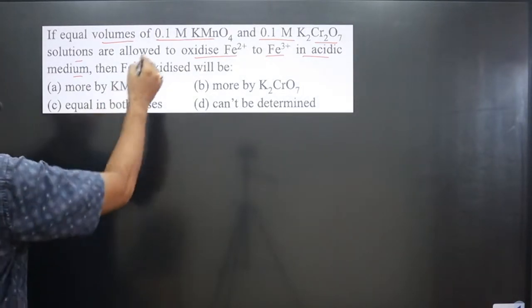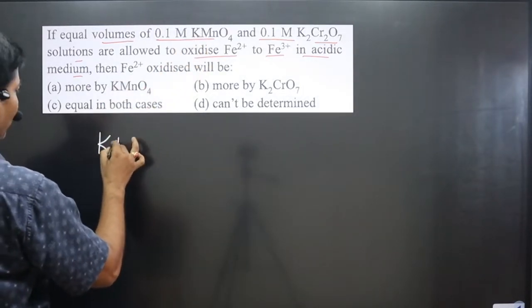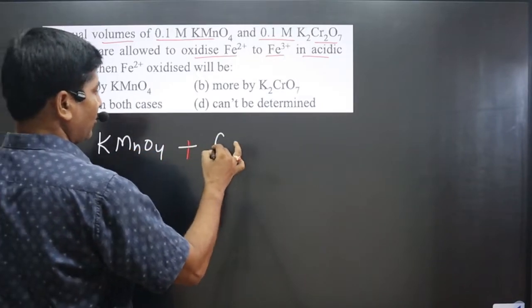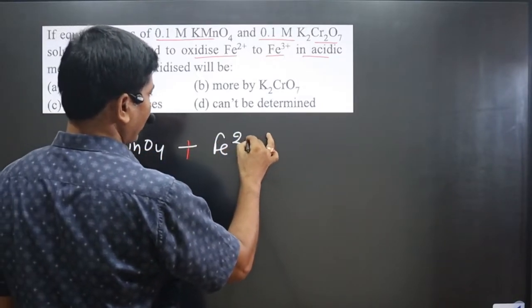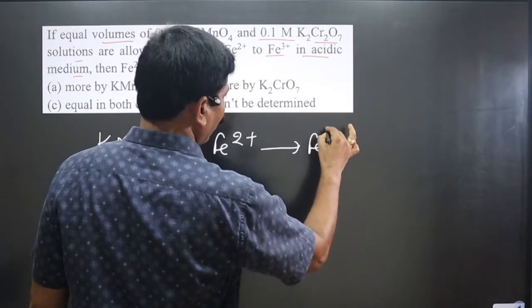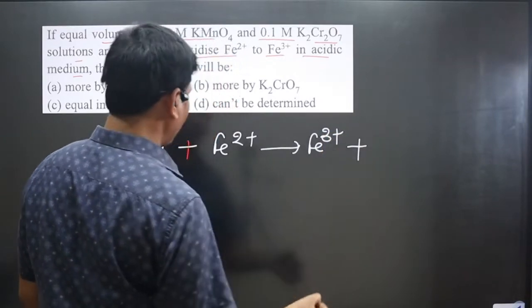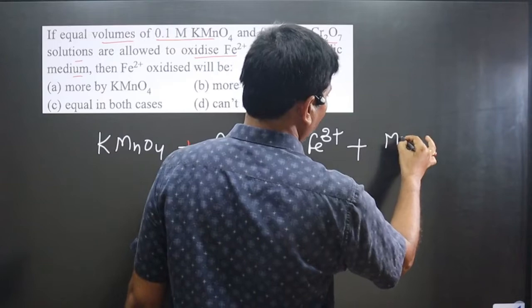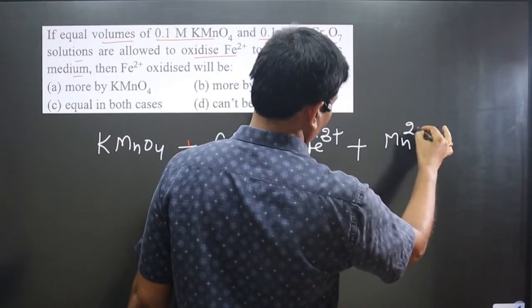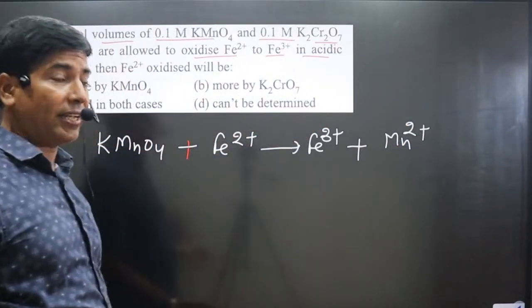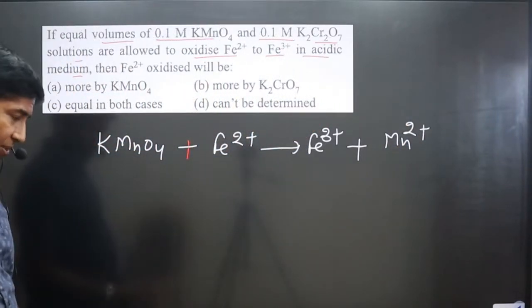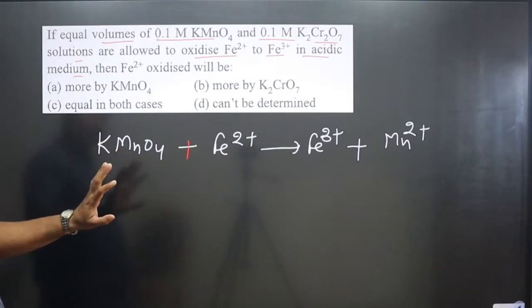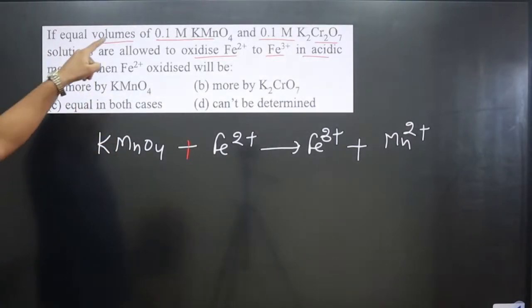Let's write the first equation. KMnO₄ is a strong oxidizing agent converting Fe²⁺ into Fe³⁺. Keep in mind this reaction takes place in acidic medium, so KMnO₄ will convert into Mn²⁺. The equation is ready and we can apply the concept of milliequivalence.